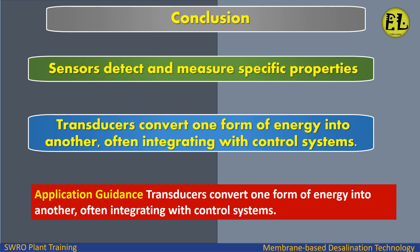Conclusion. Sensors detect and measure specific properties. Transducers convert one form of energy into another, often integrating with control systems. Application guidance: use sensors for direct measurement and transducers when conversion and integration with control systems is required.